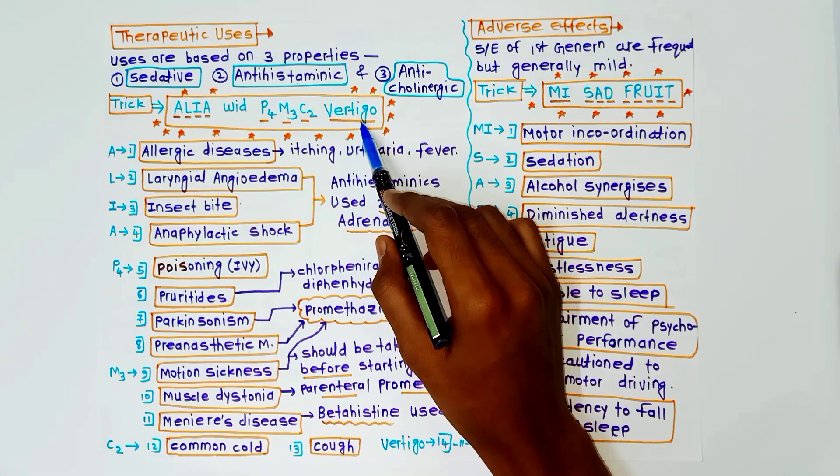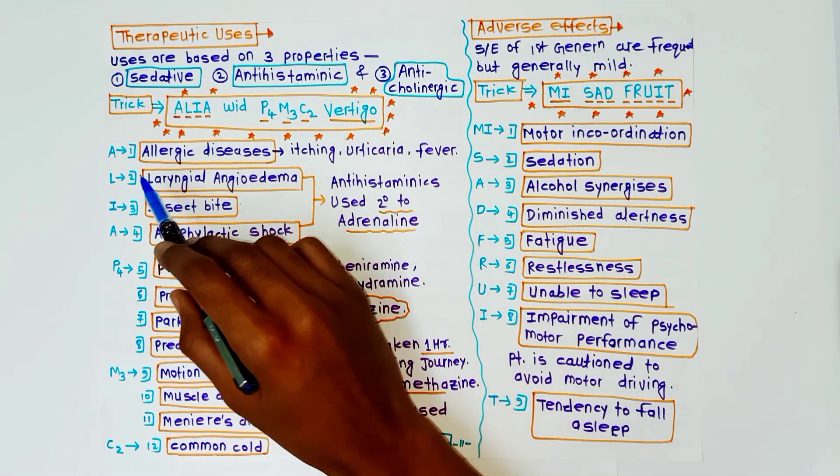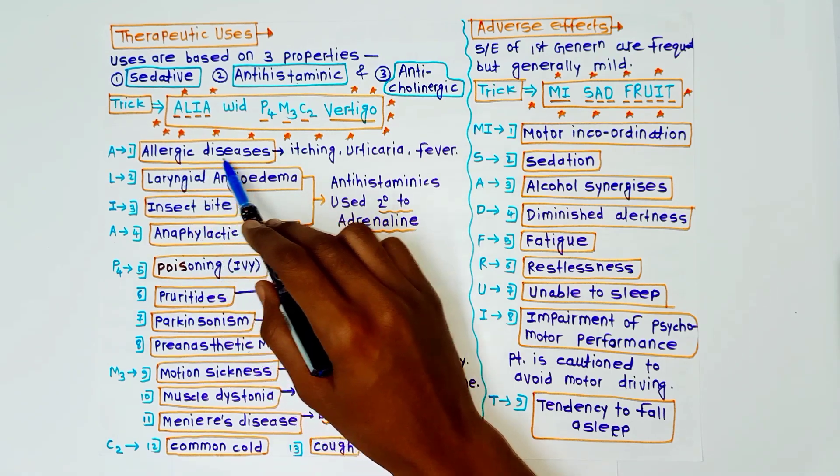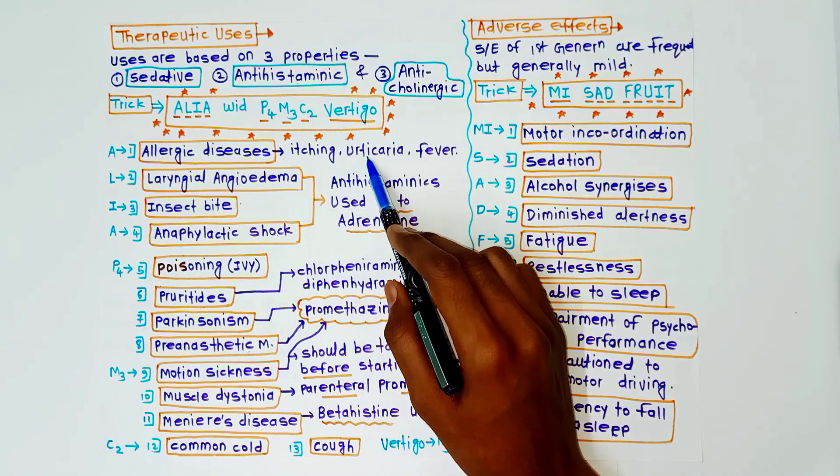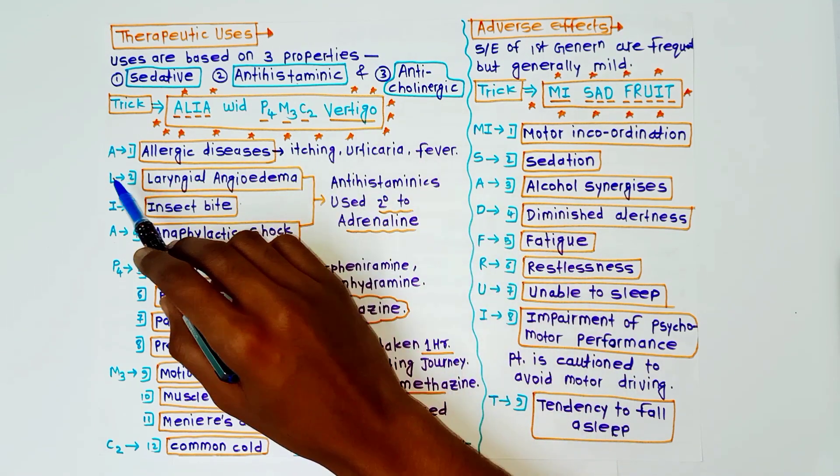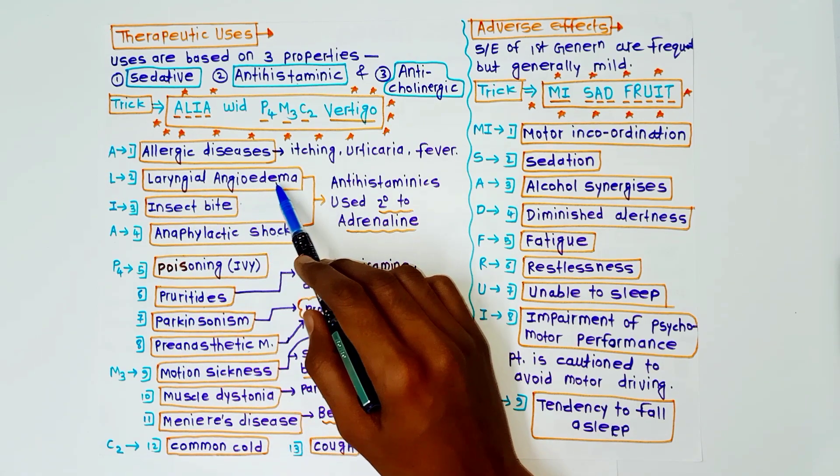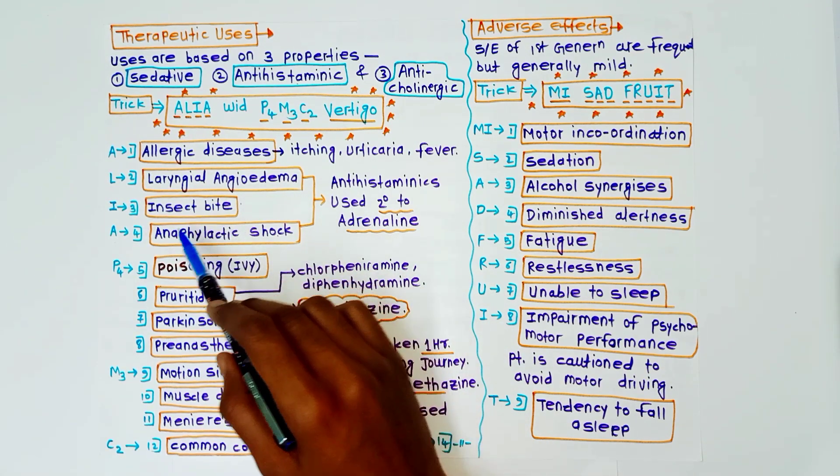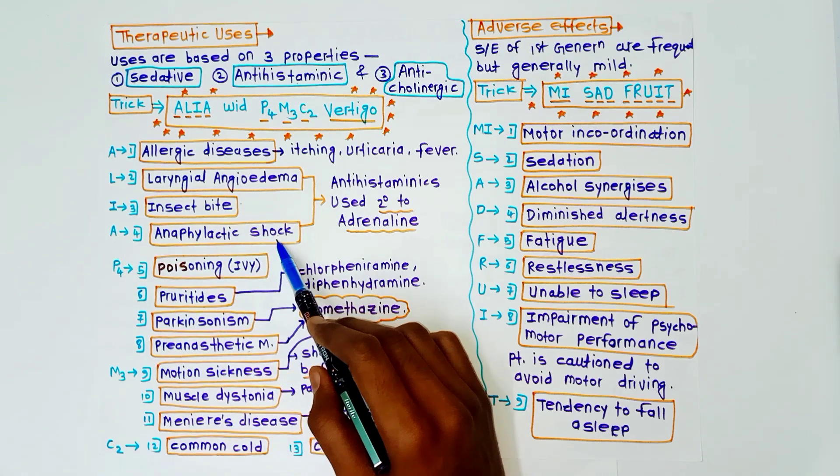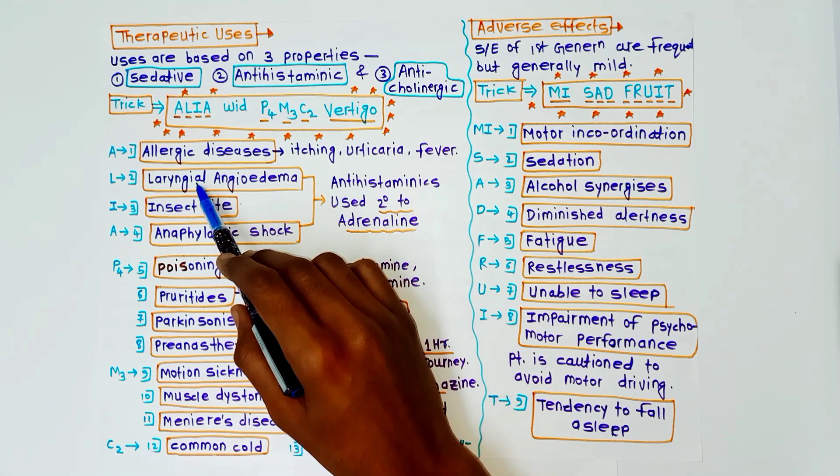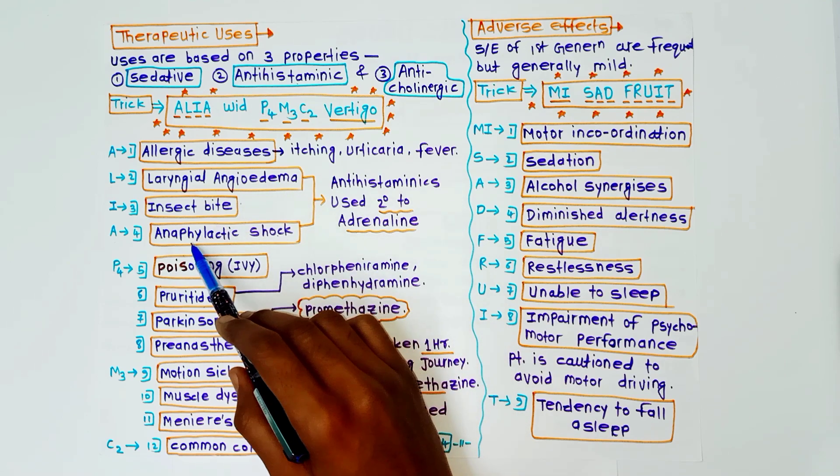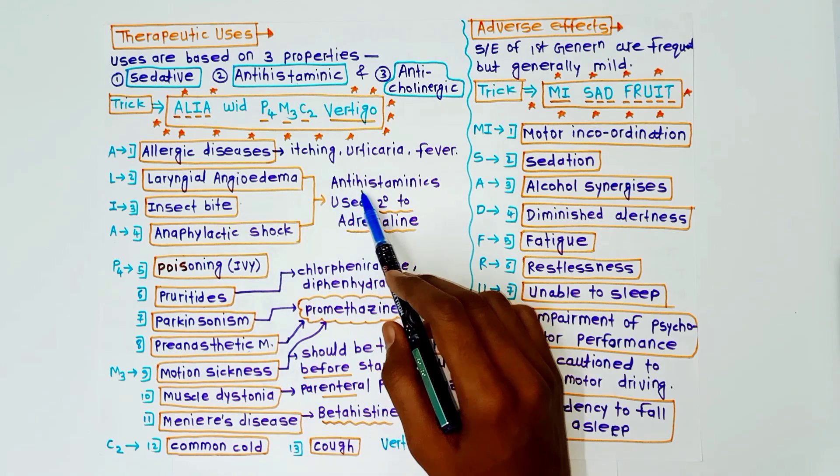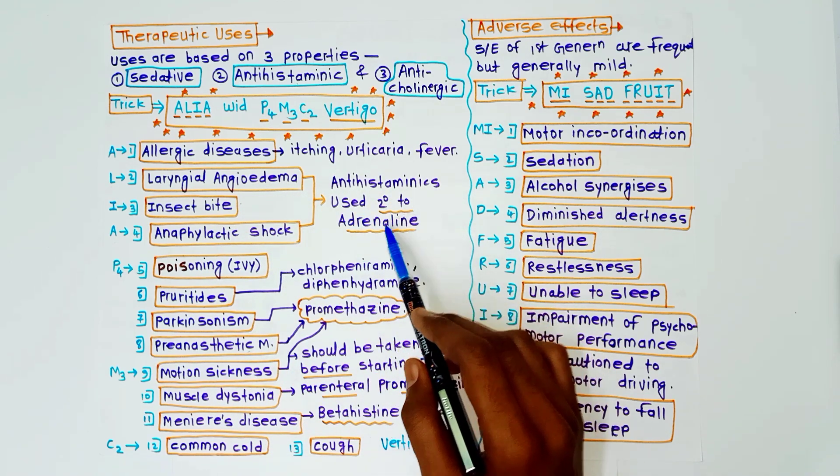So first of all A for allergic diseases like itching, urticaria, fever. L for laryngeal angioedema. I for insect bite. A for anaphylactic shock. So in case of laryngeal angioedema and anaphylactic shock, antihistaminics are used secondary to adrenaline. In these cases primary treatment is adrenaline injection, so secondary to that antihistaminics are used.